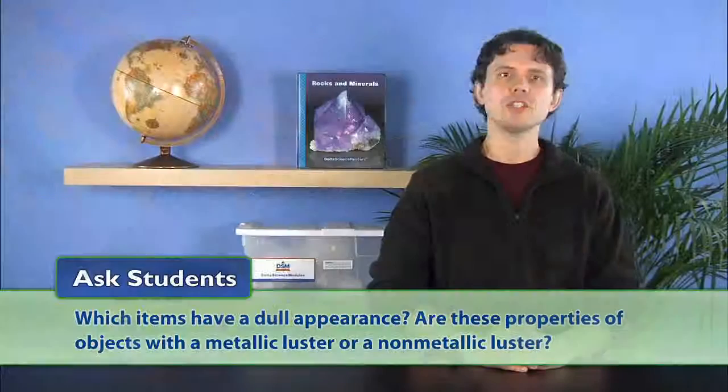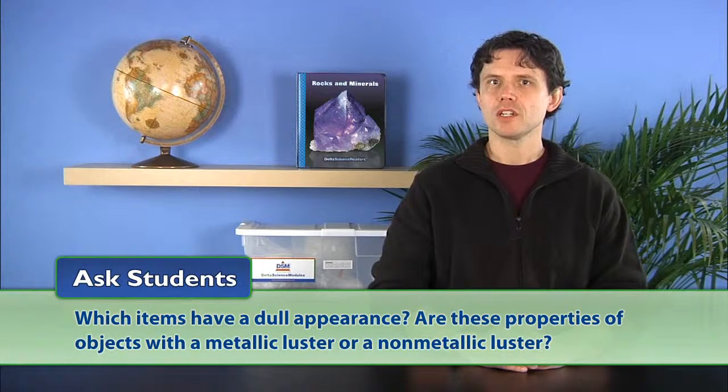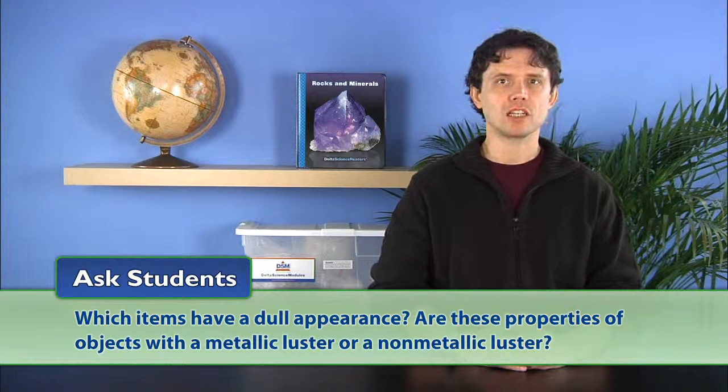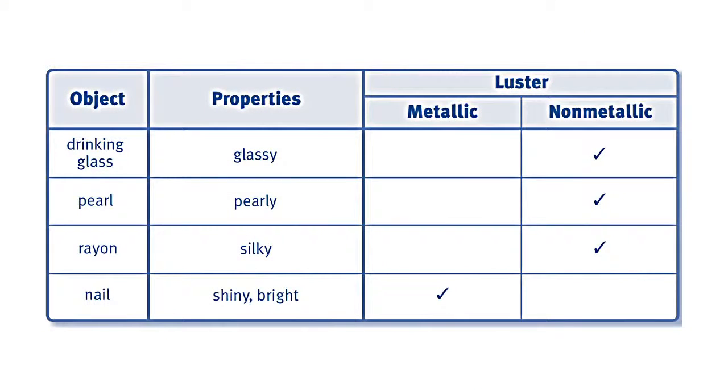Ask students which items have a dull appearance. Are these properties of objects with a metallic luster or a non-metallic luster? To record students' observations, you may wish to create a classroom chart showing properties and luster.